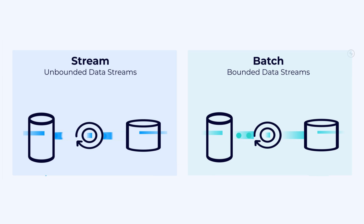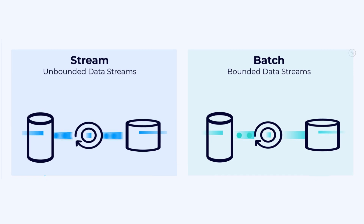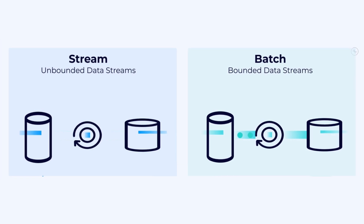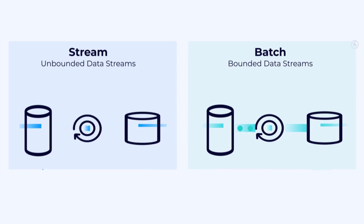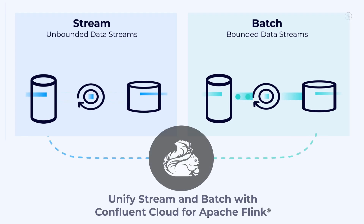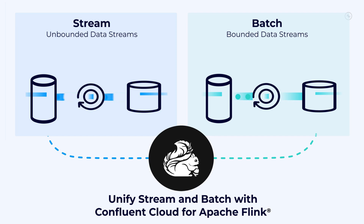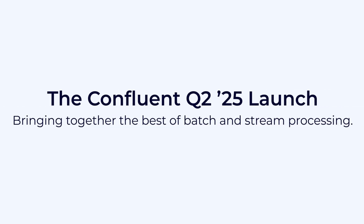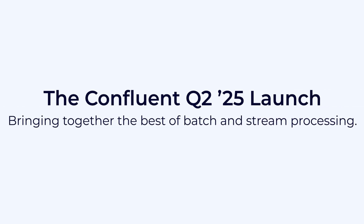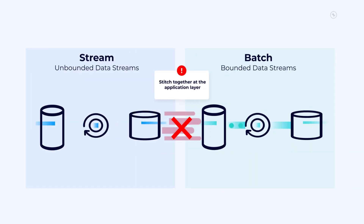What if Stream and Batch didn't live in separate worlds? What if you could seamlessly blend real-time insights with historical context? Well, good news. This quarter, we're bringing together the best of both batch and stream processing so you can power analytics, AI, and everything in between. Here's everything new in the Confluent Cloud Q2 launch in three minutes.